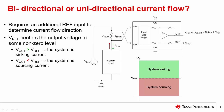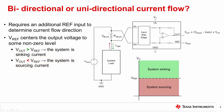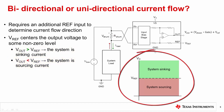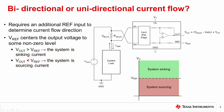This allows the output voltage range to be divided such that the system is sinking current when Vout is greater than Vref, and sourcing current when Vout is less than Vref. This is shown in the diagram on the bottom right.